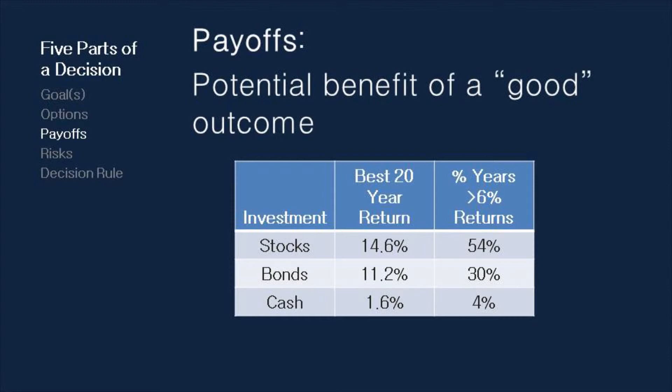For bonds, I used historical returns on 10-year treasury bonds. The best 20-year streak was 11.2% per year, and in 30% of all years investors earned more than 6% on their money. In general, holding your money in cash has little upside because inflation eats away at its value. The best period ever for holding cash was 1921 to 1940, a period in which the U.S. suffered a lot of deflation. But in only 4% of all the years in the past century has cash earned more than 6% real return, meaning the upside of holding cash is very low.